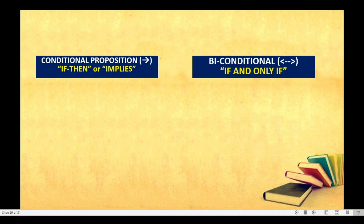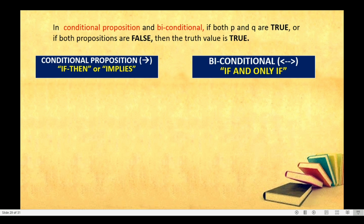Now let's proceed to conditional proposition and biconditional proposition. The similarity of these two is: if both propositions are the same — if P and Q are both true, or if they are both false — then the truth value is true. So when the propositions match, whether both true or both false, the truth value is true.